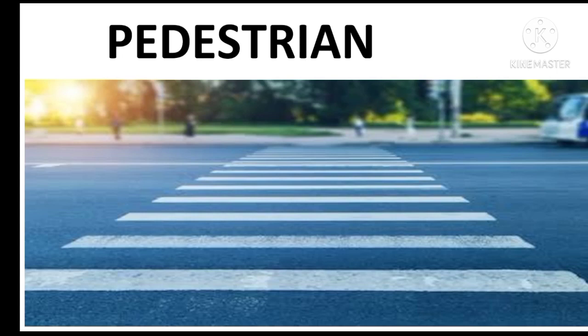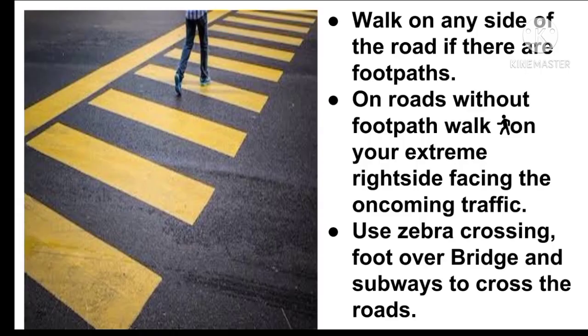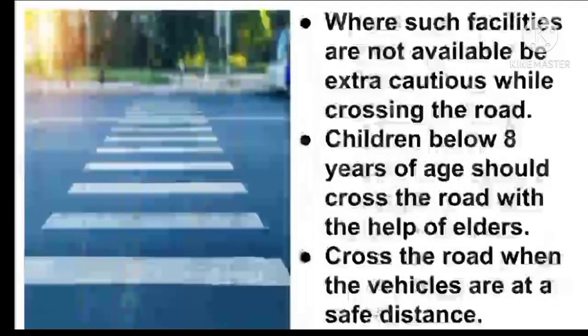Now let's see what you have to do while crossing roads. Do's: while crossing the road, walk on any side of the road if there are footpaths. On roads without footpaths, walk on your extreme right side facing the oncoming traffic. Use zebra crossings, foot over bridges and subways to cross the roads. Where such facilities are not available, be extra cautious while crossing. Children below 8 years of age should cross the road with the help of elders. Cross the road when vehicles are at a safe distance.